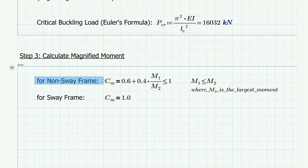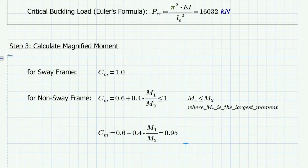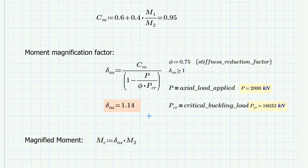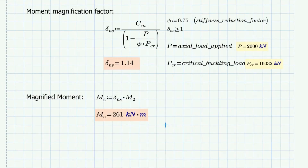Next is to calculate the magnified moment. Cm for a non-sway frame is calculated using this formula; if the column is in a sway frame, Cm equals 1. We take the maximum of the end moments and magnify it using the magnification factor, which is given by this formula, where P refers to the total factored load and Pcr is the critical buckling load calculated earlier. We get a magnification factor of 1.14, and we magnify M2 since it is the larger moment.